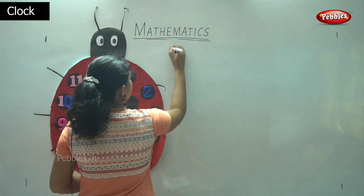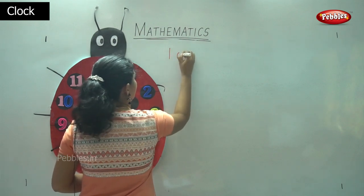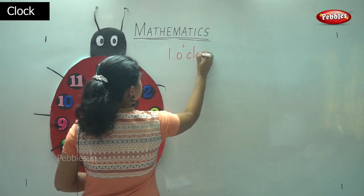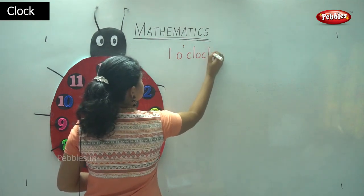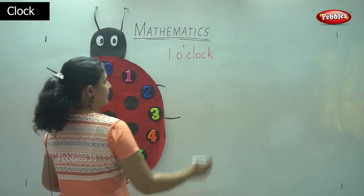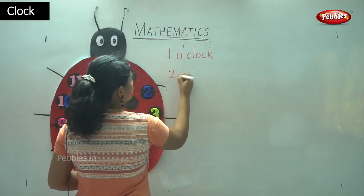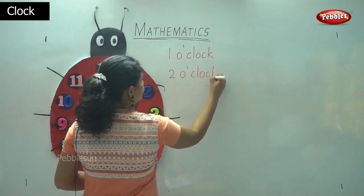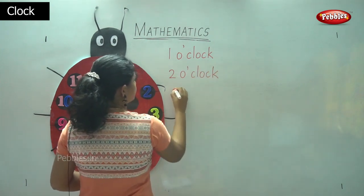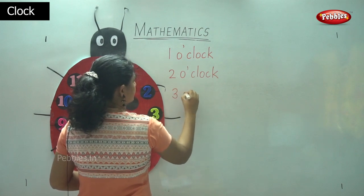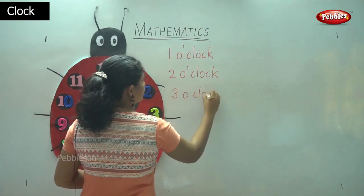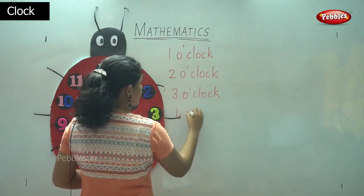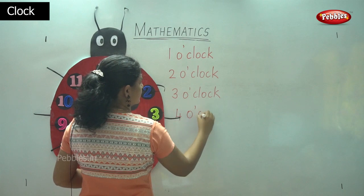We will write it as 1 o'clock. This is the way you write the timing. So it is 2 o'clock. Then we go to when it is 3 o'clock. When it is 4 o'clock we write it as 4:00.